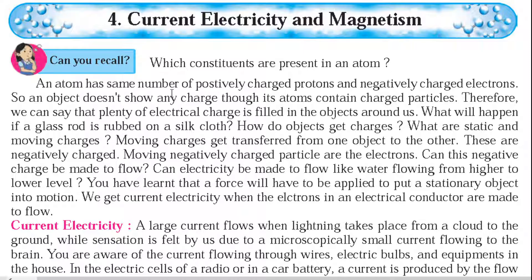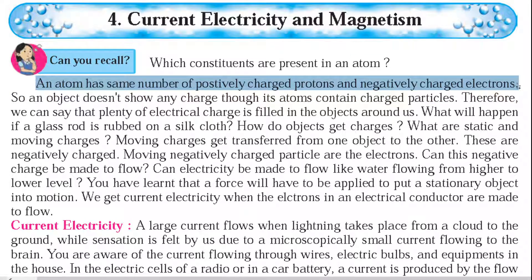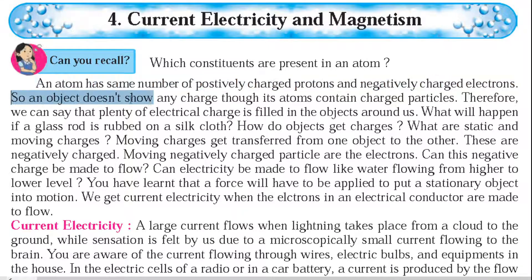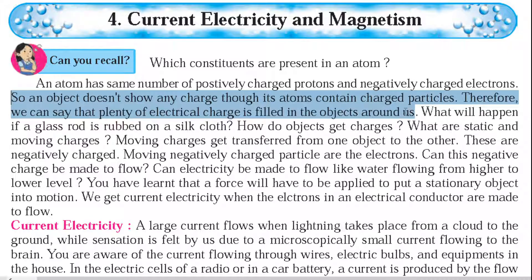An atom has the same number of positive charges (protons) and negative charges (electrons). So positive and negative charges are equal. Therefore, an object doesn't show any net charge through its atoms, even though it contains charged particles.